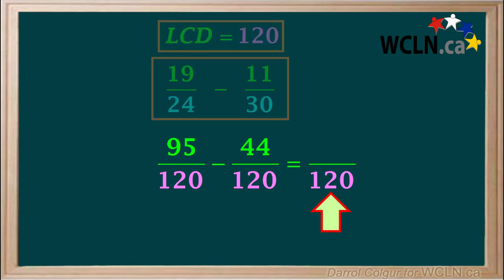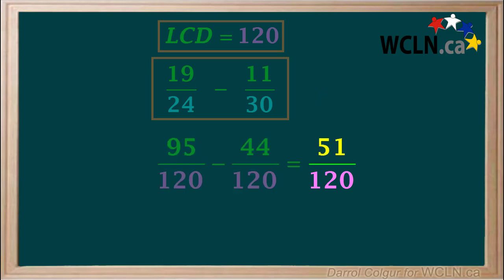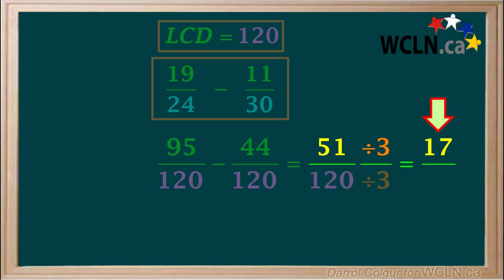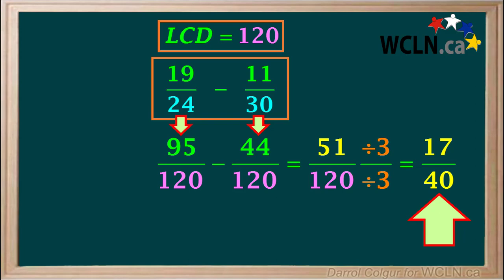The denominator for our answer will be 120, and the numerator will be 95 minus 44, which is equal to 51. However, taking a closer look at the fraction 51 over 120, you may realize that both 51 and 120 can be divided by 3 to give whole numbers, and reduce this fraction to simpler terms. So we'll divide both 51 and 120 by 3. 51 divided by 3 equals 17, and 120 divided by 3 equals 40. So the final answer to the question, reduced to its lowest terms, is 17 over 40.